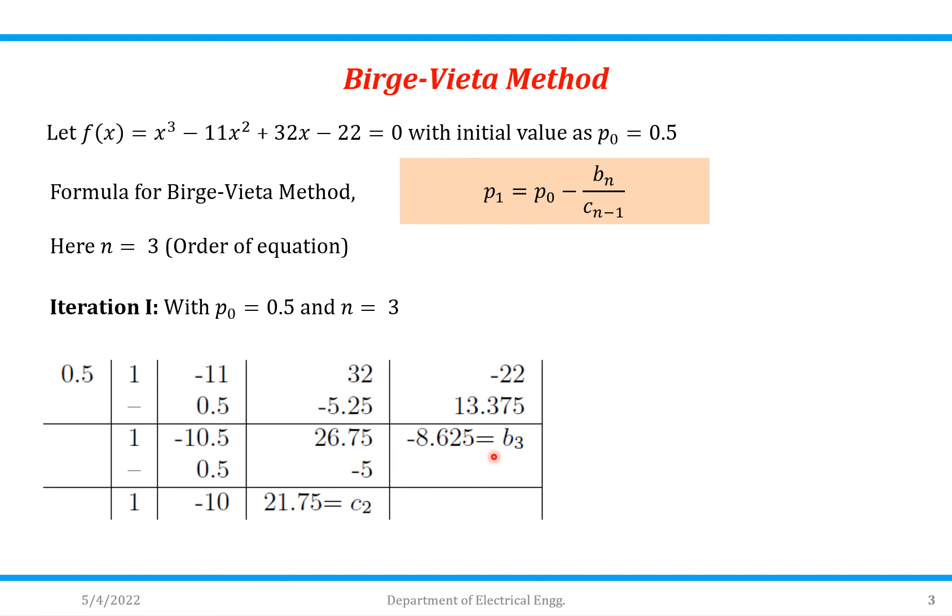Again we have to perform synthetic division with same value 0.5. So 1 will be as it is. 1 × 0.5 is 0.5. These will be added, so answer is -10.